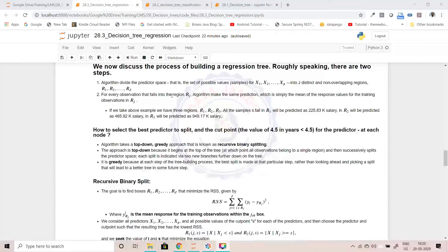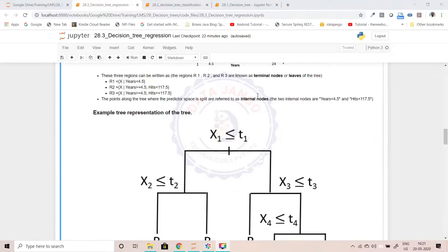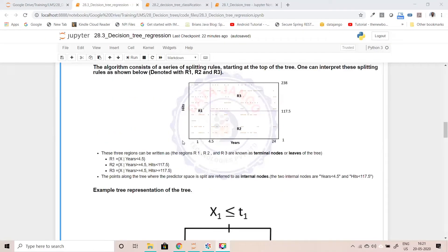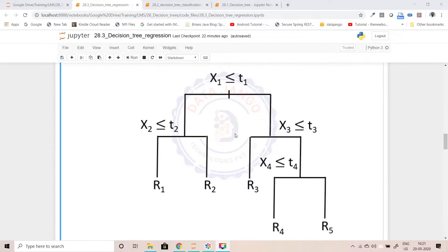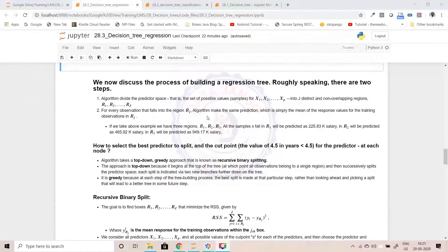For every observation falling into one region Rj, the algorithm makes the same prediction. We have seen that. The mean of all the salary is going to be the prediction for all these records. The mean of the salaries of all these records is going to be the prediction. The algorithm makes the same prediction, which is simply the mean of the response variable or the target variable in the region.